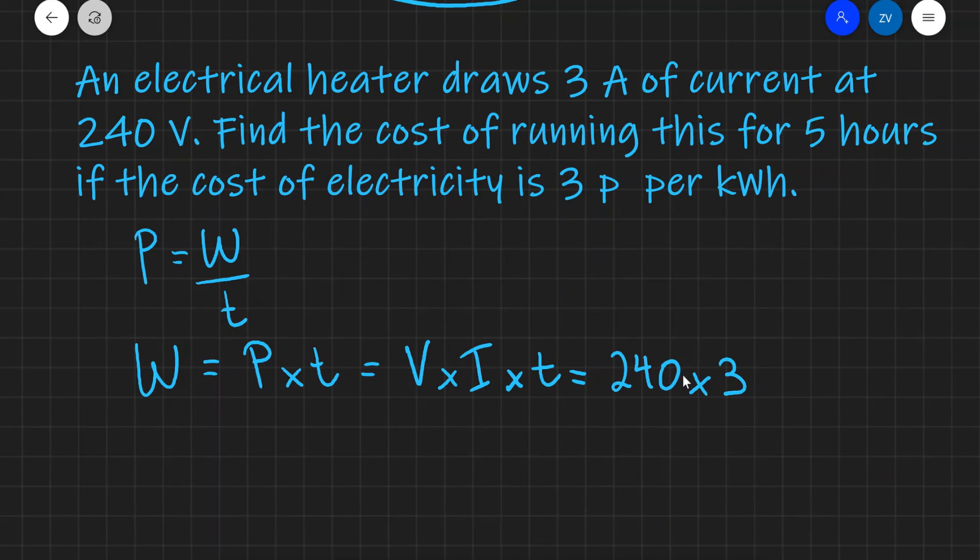This will give me the power in watts. However, because I want the power in kilowatts, I'm going to also divide by a factor of 10 to the 3, which is 1000, like so. And this mathematical quantity is actually equal to my power V I in kilowatts. All I need to do is multiply this by the number of hours, which is 5. So this over here is my T.